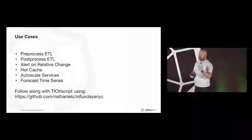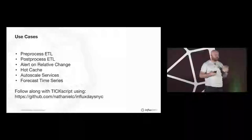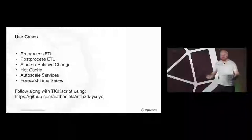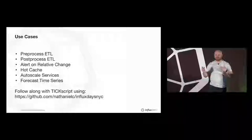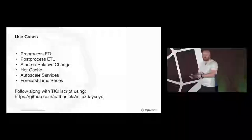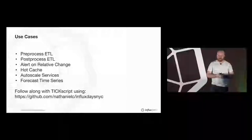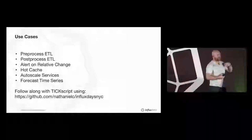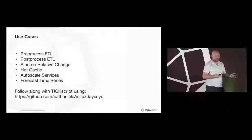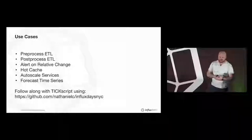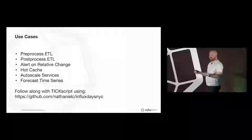What are the six use cases we're going to talk about today? We'll talk about two kinds of ETL jobs — extract, transform, and load — your basic data prep and data cleaning steps. We'll talk about how to alert on a relative change, how to build a really rich alert beyond simple static alerts. We'll talk about how to use a hot cache — having Kapacitor pre-compute data so it's available cached for on-the-fly queries. We'll also cover auto-scaling your applications and forecasting time series data.